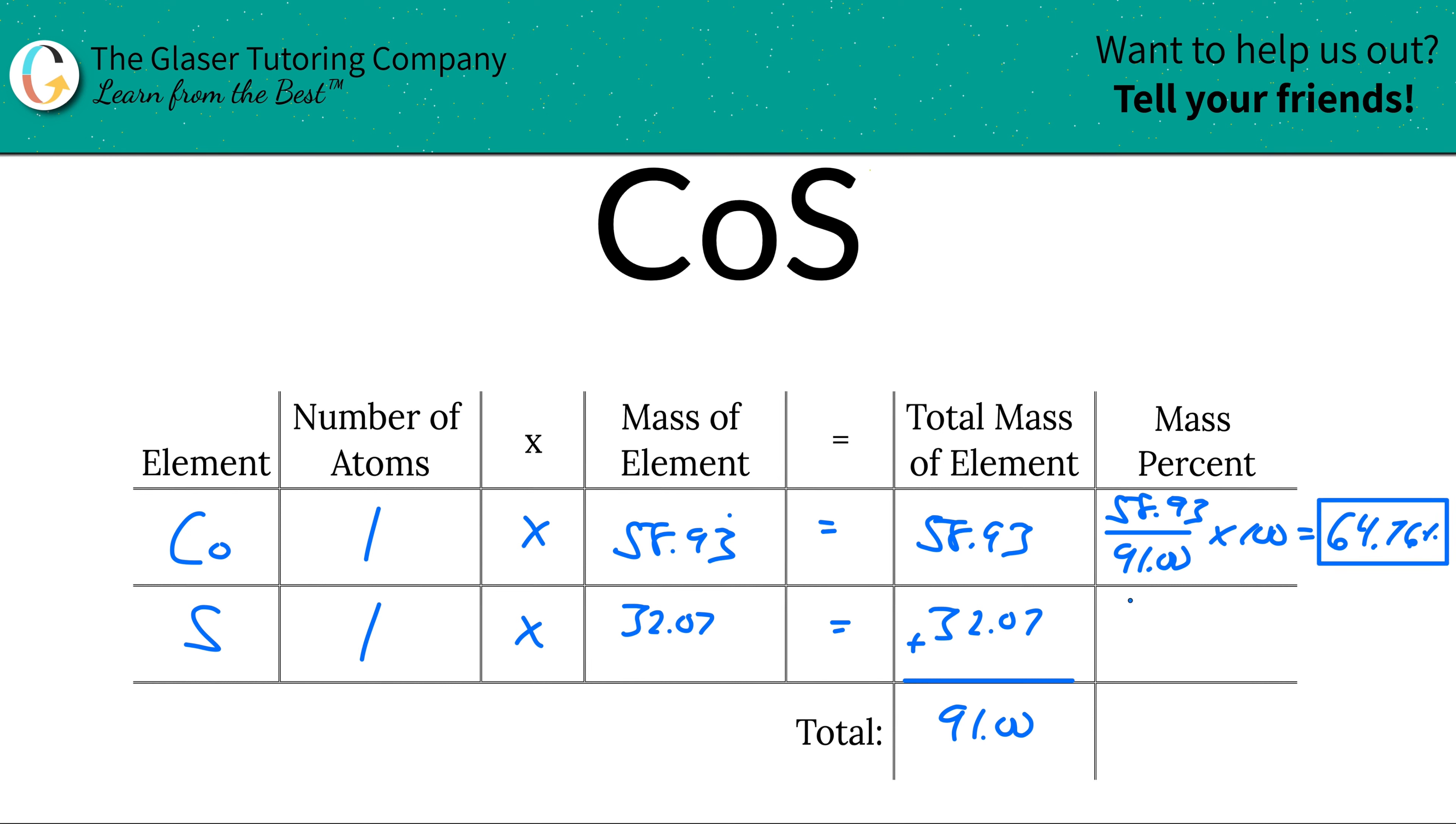And then the sulfur. We take the total mass of that sulfur we found, the 32.07, and we simply divide that by the 91. You can leave out the two zeros in the bottom. It really doesn't matter. And this works out to be about 35.24 percent. And if this was done properly, these two percentages should add up to 100 percent.